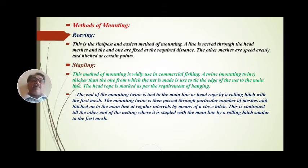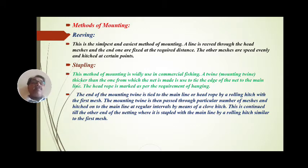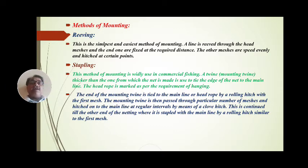The second method is called the stapling method. This method of mounting is widely used in commercial fishing. A twine or thread thicker than the one from which the net is made is used to tie the edge of the net to the main line. The head rope is marked as per the requirement of hanging, and the net is attached. That method is called the stapling method.